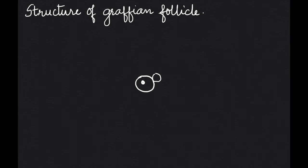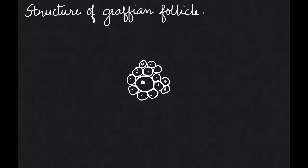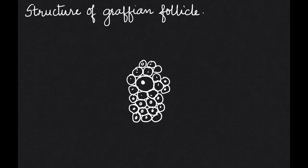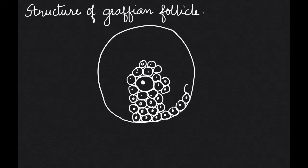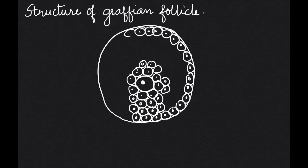Here we begin with drawing the oocyte and surrounding it with a row of cells. After the row of cells, we draw a group of cells on which this oocyte is present. Then we have to make a circular structure, so we draw a circle here and then fill it with the cells. These cells have to be arranged in the periphery only, and this way we complete the cells drawing them to form the complete circle.